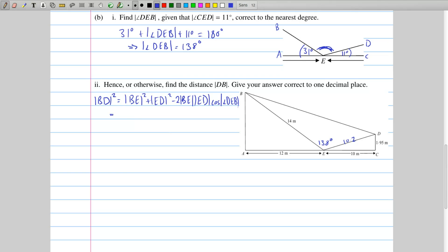Then we just substitute in everything we know. BE is 14, and that gets squared. ED we said is 10.2, and that gets squared as well. Then it's minus 2 times 14 times 10.2 times cosine of the angle in between them, which is 138 degrees we worked out in the previous part of the question. So this is 196.